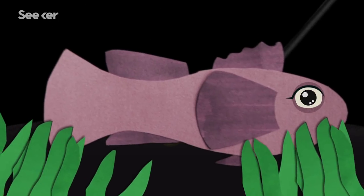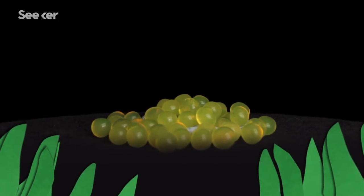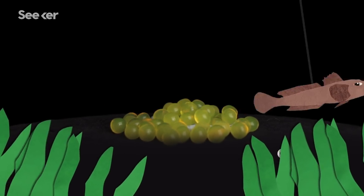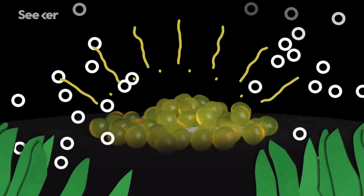Females deposit their eggs in small depressions on the sea bottom, which males then fertilize, directly exposing the sperm to the danger of the open ocean.